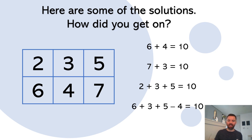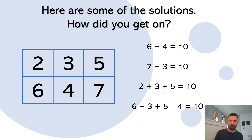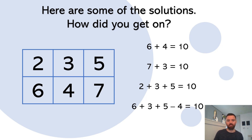Here are some of the solutions. Six add four is ten, seven add three is ten — got those. Two add three add five — yep, got that one too. Six add three add five take away four — didn't quite get that one, oh well, but I got others. Pretty good going!